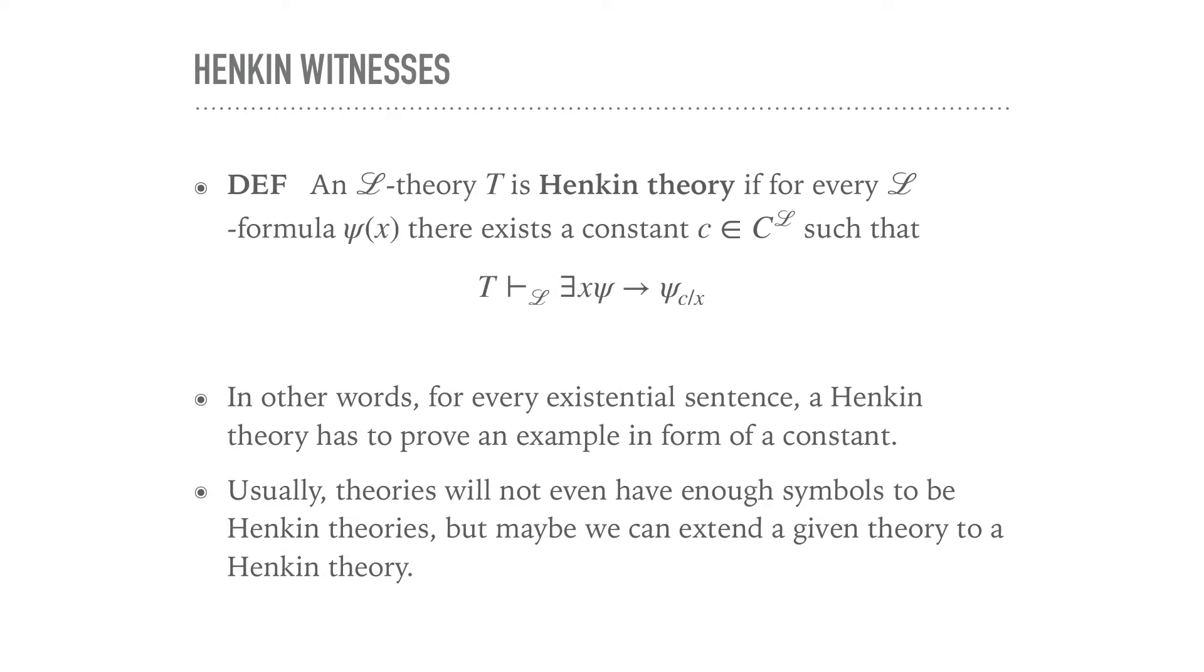We start with a definition of Henkin theories. We say T is a Henkin theory if for every formula ψ(x), there exists a constant c such that T proves that ∃x ψ implies ψ if I substitute c for x. So T has to be strong enough to supply us witnesses to existential statements. For every existential sentence, a Henkin theory has to prove an example in form of a constant.